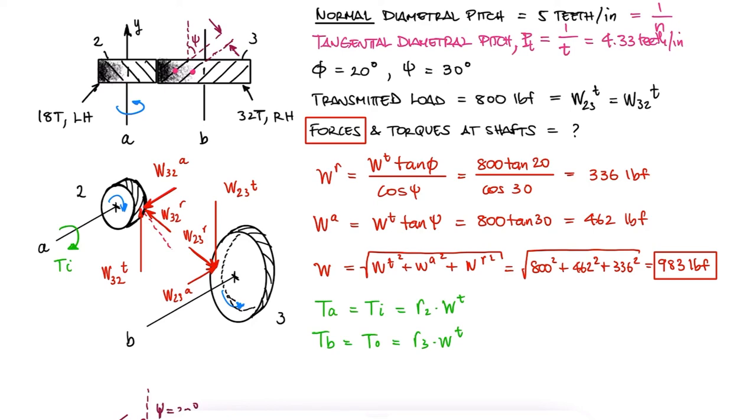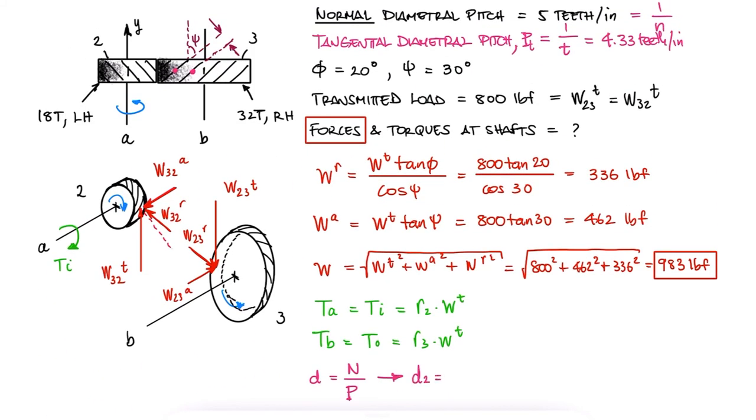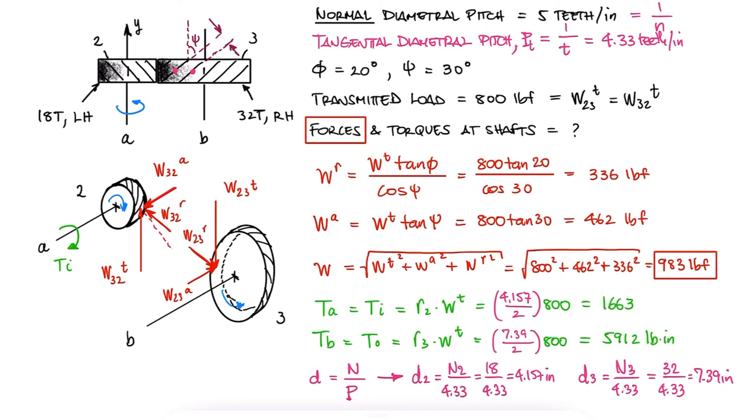With the tangential diametral pitch and 18 teeth for gear 2 and 32 teeth for gear 3, we find the diameter of each gear and therefore the radii and the torques.